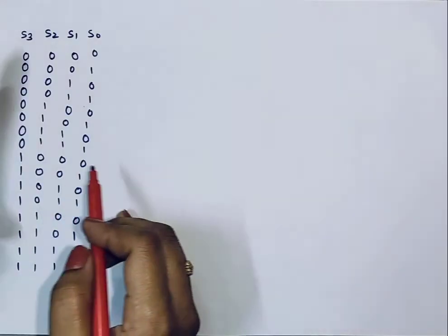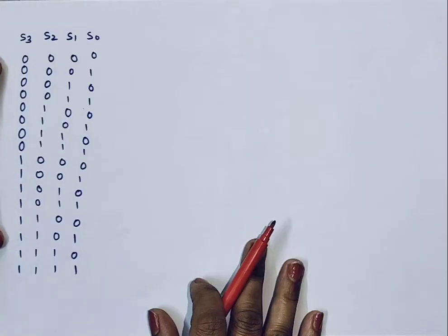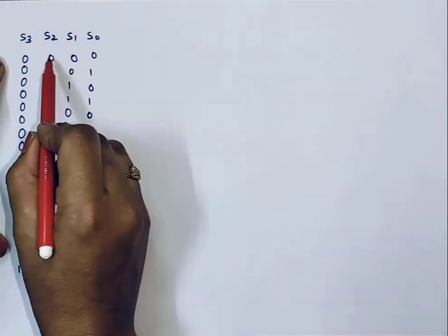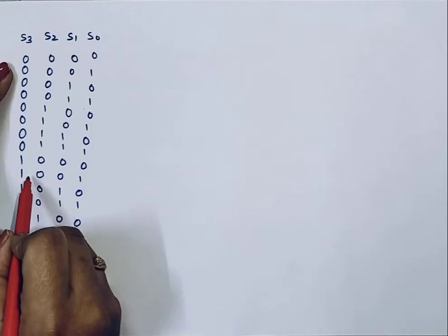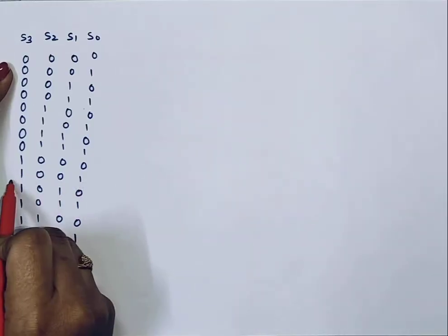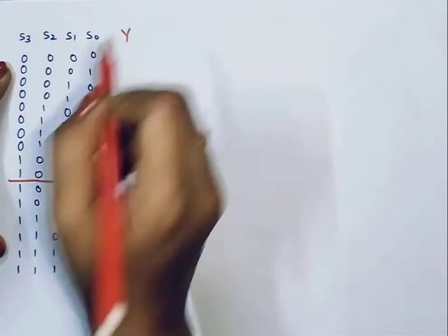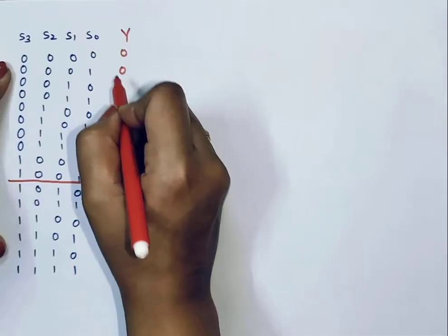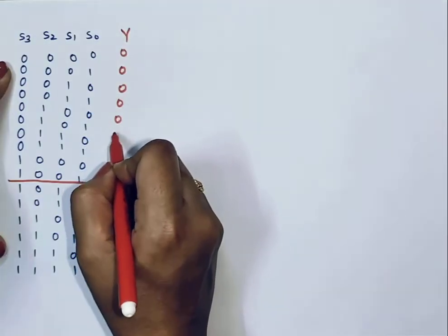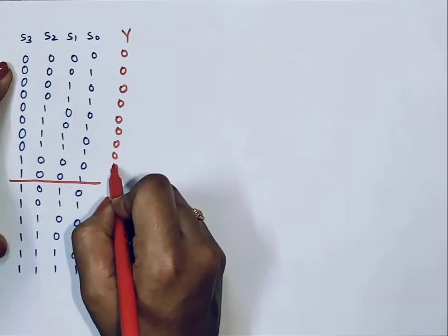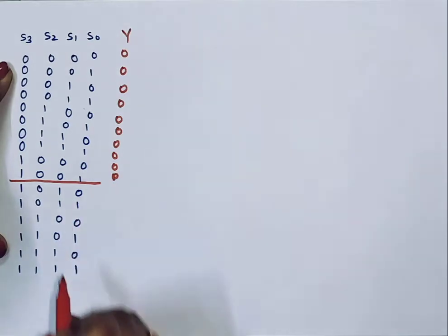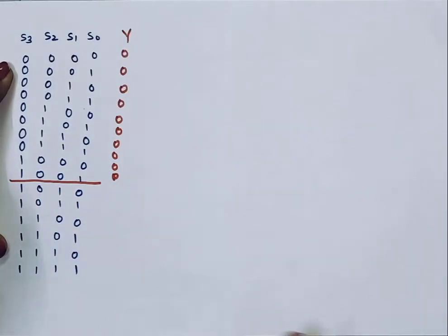Looking at the truth table: for sums from 0000 to 1001 (up to 9), the answer is valid BCD so no correction is required. But after 9, if the answer is 1010 or greater, we need to correct it, and we can correct it by adding 6.